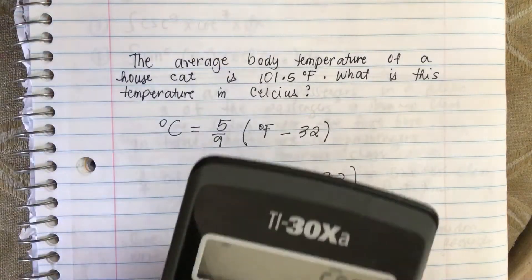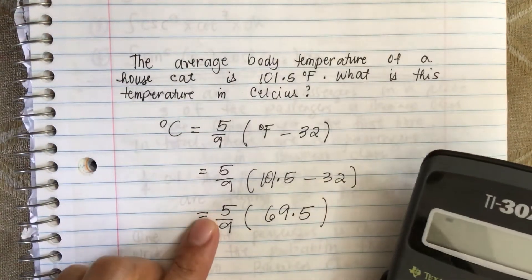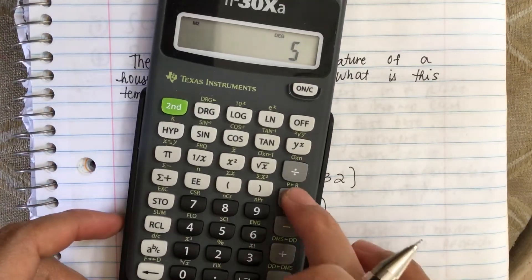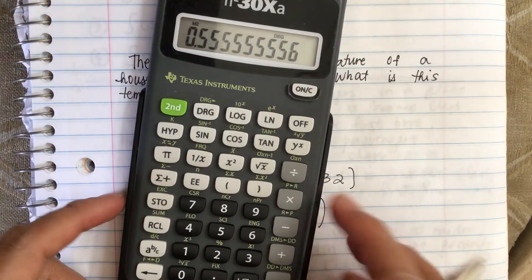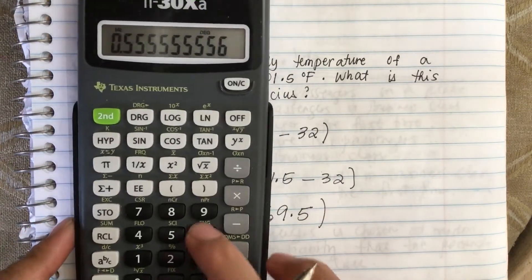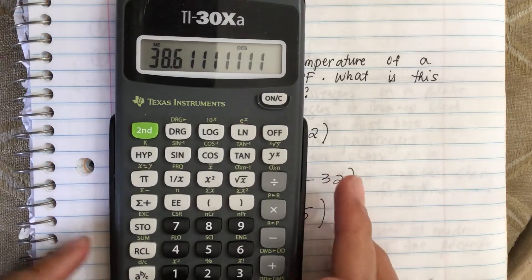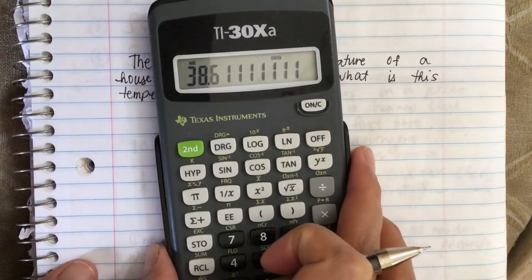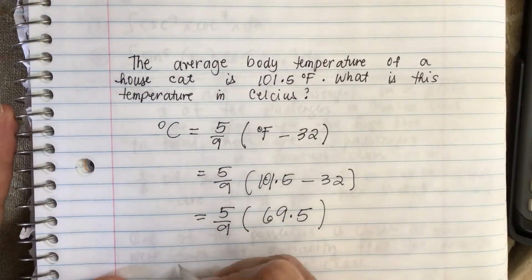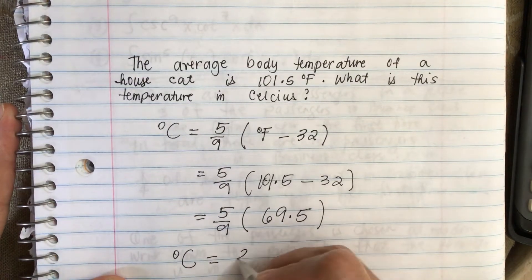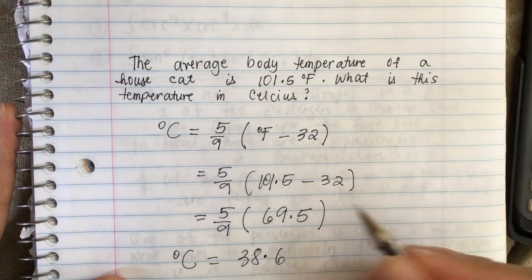So then we now multiply by 5 over 9. So we have 5 over 9 times 69.5, so it's equal to 38.61 or 6. So degrees Fahrenheit, degrees Celsius is equal to 38.6 degrees.